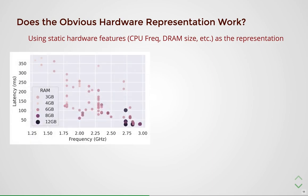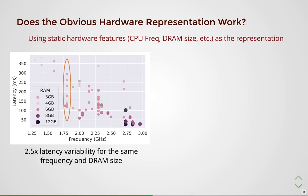The first-principles approach is to use static hardware features such as CPU frequency and DRAM size. To understand if they are any good, we plot the frequency for all mobile devices against their latency on MobileNet V2, with the hue for each point representing DRAM size. Although we observe a decreasing latency trend with an increase in frequency and DRAM size, there is significant variability. For instance, a set of devices exhibits a latency variability of 2.5 times for the same frequency and DRAM size, showcasing poor correlation between static hardware features and latency.